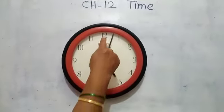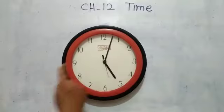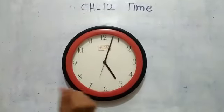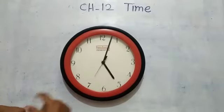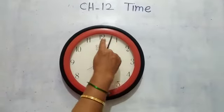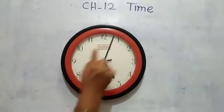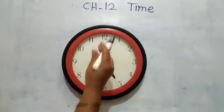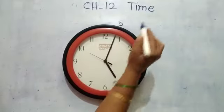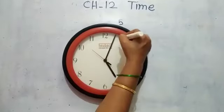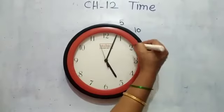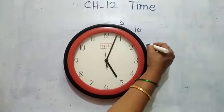Look here — here are some numbers. These are the numbers from 1 to 12, shown on the clock. From 12 to 1, the time is equal to 5 minutes. Children, listen: from 1 to 2 is also 5 minutes — means 5 plus 5 is 10. From 2 to 3: 10 plus 5 is 15.